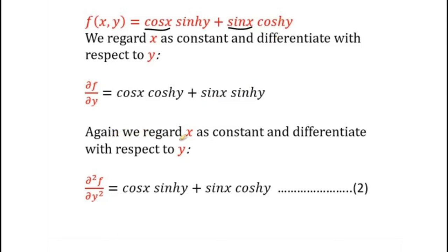Again, we regard x as constant and differentiate with respect to y. So we have partial square f over partial y square, which is equal to cos(x)sinh(y) plus sin(x)cosh(y). We name this equation as equation 2.